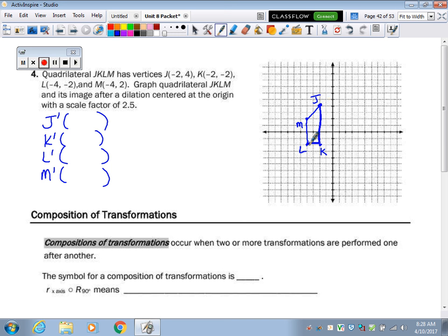Sorry, that didn't come out very good. All right, so graph the image of this after a dilation with a scale factor of 2 and a half. So, you gotta multiply all these numbers by 2 and a half. So, I just used my calculator to do it. So, that will go to negative 5, 10, negative 5, negative 5, negative 10, negative 5, negative 10, positive 5.